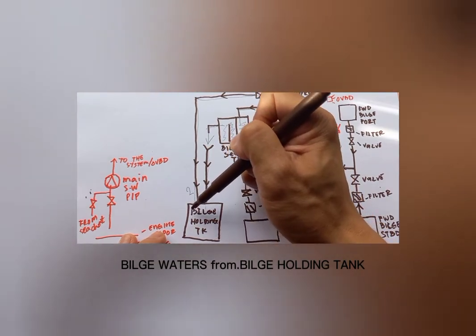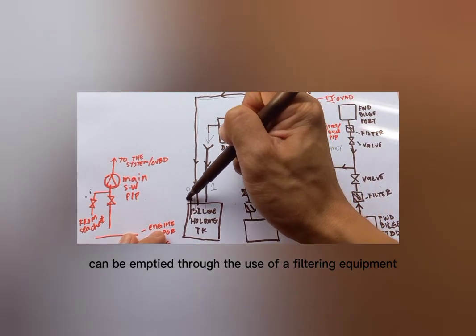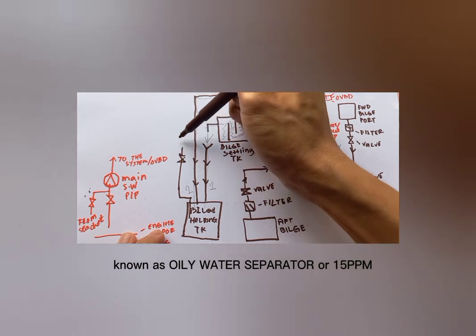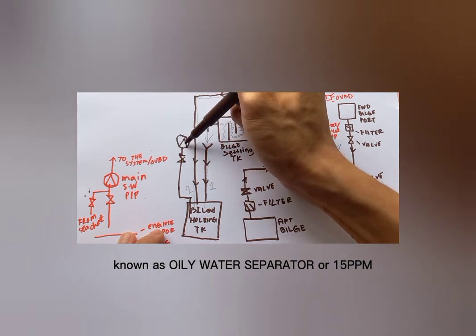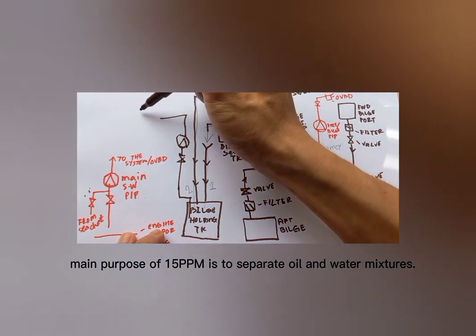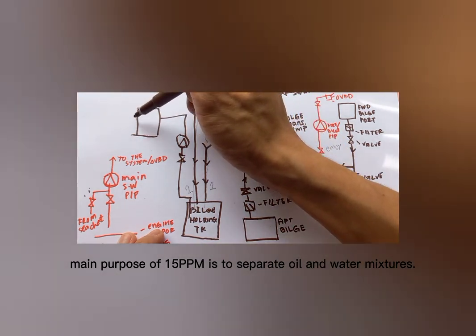Bulge waters from bulge holding tank can be emptied through the use of a filtering equipment known as oily water separator or 15 ppm. Main purpose of 15 ppm is to separate oil and water mixtures.